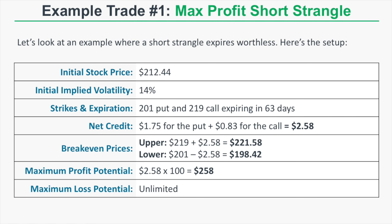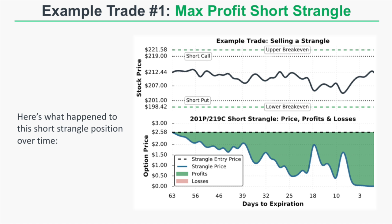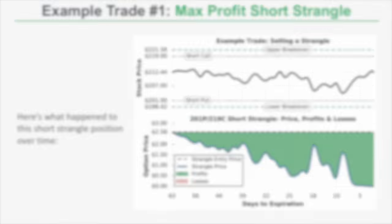Looking at how this position performs over time: the stock price remained between the short call and short put strikes all the way through expiration. The strangle was entered for a net credit of $2.58, and as time passed the strangle's value dwindled away to zero at expiration. Since we sold the strangle for $2.58 and it expired worthless, this yields a profit of $258 per short strangle.